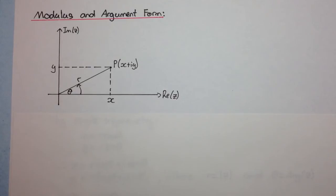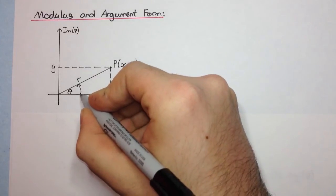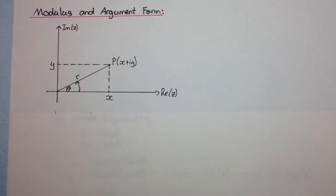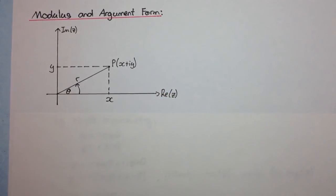Right, so the argument is always the angle that the vector makes with the positive real axis. So if we had theta being negative, that means we'd be going down like this, so in this direction. Okay. Now, we can once again look at this and consider just simple trigonometry.